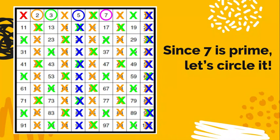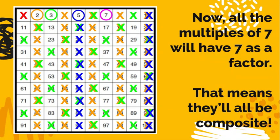Since 7 is prime, we pick a new color. I chose a kind of magenta-ish, pinkish, purplish color. We circle it, and then we get fancy again. We know that all of the multiples of 7 are going to have 7 as a factor, so that means they're all going to be composite. We can cross them off.